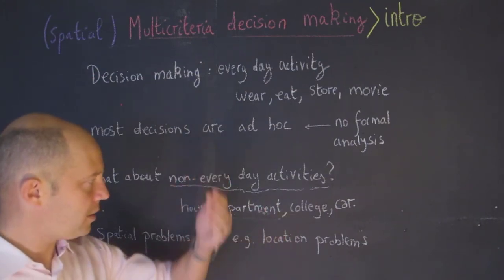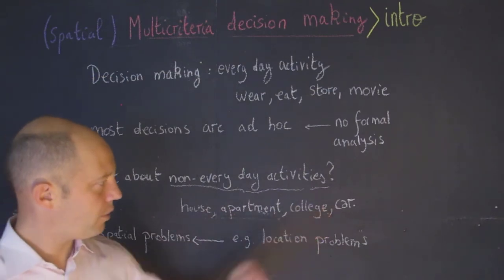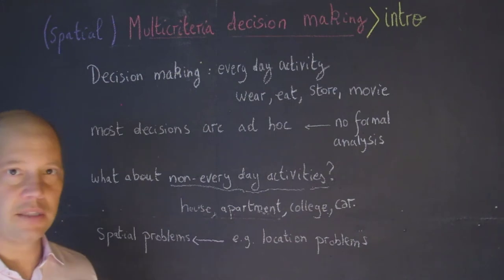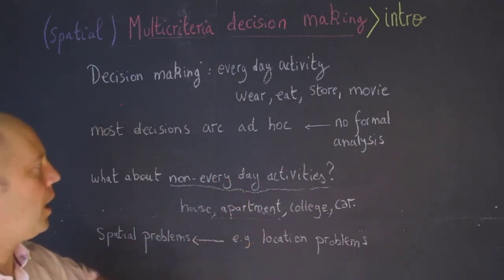When you go to college you may list the different colleges or universities you would like to attend, or if you're buying your first car, you may think about it and try different cars. There are different criteria that come into play, and this is a non-trivial decision as opposed to the ones we're talking about earlier.